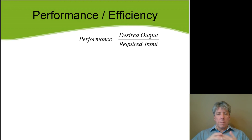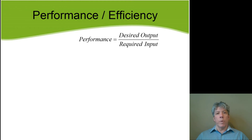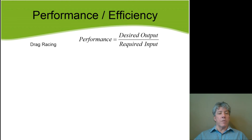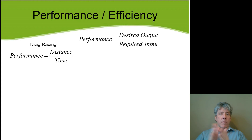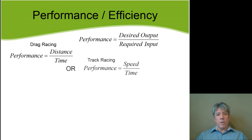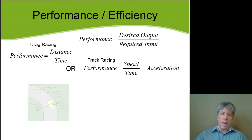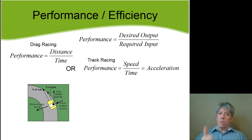To understand the best we could ever do with a heat engine or refrigerator, we have to define efficiency. Efficiency or performance is defined as desired output over required input. In drag racing, performance means distance per time — a fixed distance, and the less time it takes, the greater the performance. In track racing with curves, performance is measured as acceleration — speed per time. You want a big engine to accelerate forward, but also powerful brakes to slow down quickly before curves.